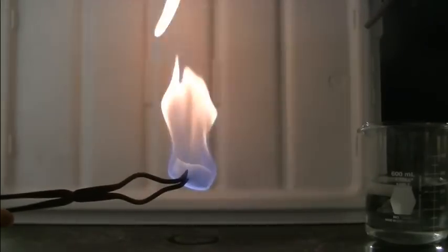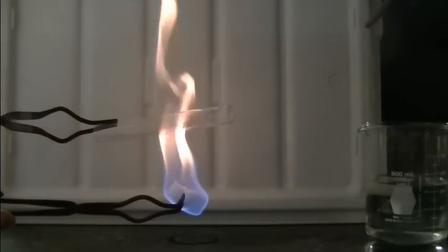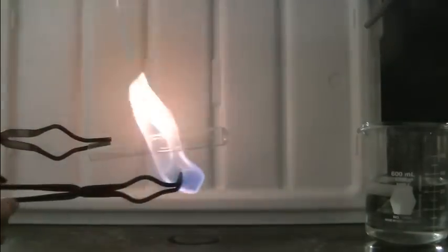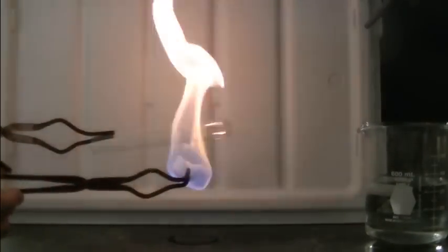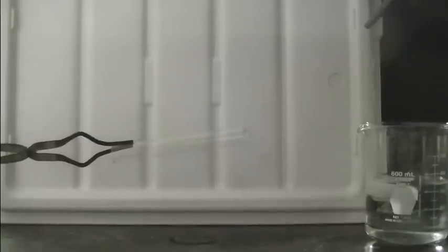Once again we can do the test tube test to look for the formation of soot. And what we recognize is that even though the flame was quite yellow there's not much evidence of soot formation. So even though we saw evidence of soot formation in the burning of the ethanol there's not enough soot being produced to form a lot of residue on this test tube that was placed in the flame.